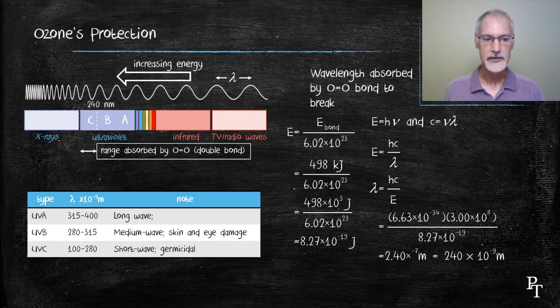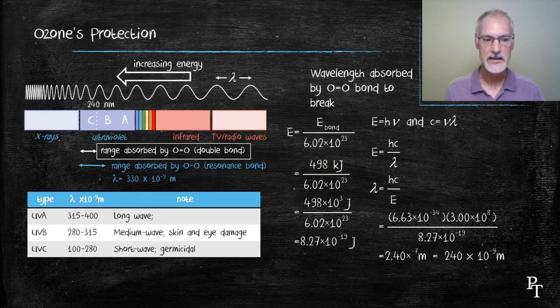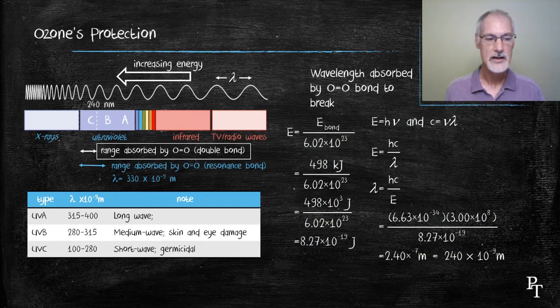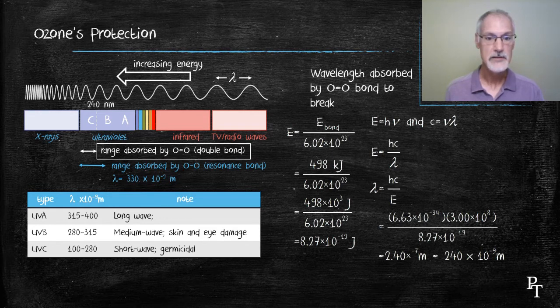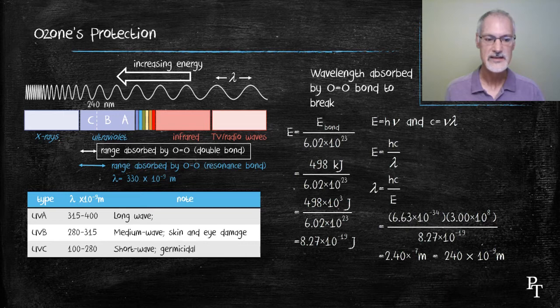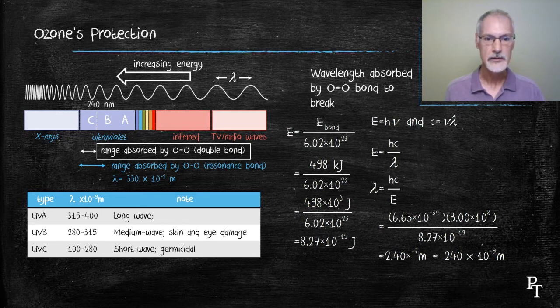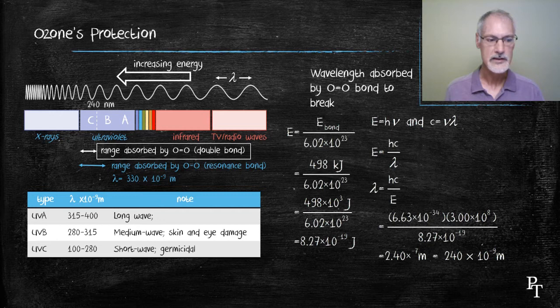Now, if we add to this what happens when we use the oxygen-resonance bond, we change the 498 to 363 kilojoules, and I repeat the calculation, and I arrive at 330 nanometers. That 330 nanometers would also encompass not only the C range, but the B range of ultraviolet light. The B range of ultraviolet light is attributed to the formation of skin cancer and eye irritation. So, essentially, that resonance bond is capable of absorbing ultraviolet B light and removing it from the sun as it comes down towards us. The two of them together essentially remove ultraviolet B and ultraviolet C, allowing only ultraviolet A to reach Earth.